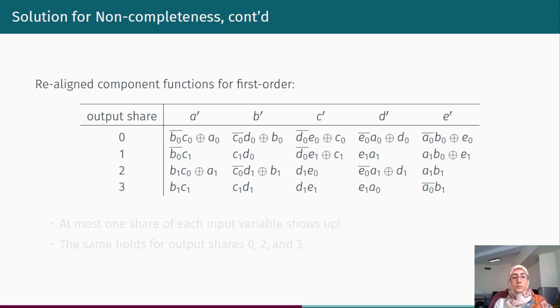The realigned component function or proposed realigned component function for first order is shown here. It can be checked that at most one share of each input variable shows up in each of the output shares. This is true for output share one and the rest of the outputs.